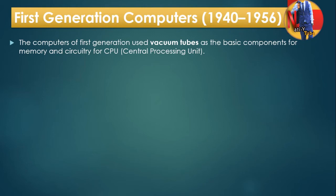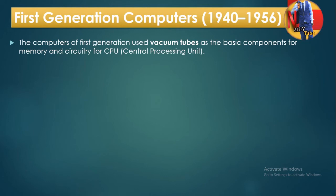Vacuum tubes are the basic components for the memory and circuitry for the CPU, or central processing unit. The vacuum tube was used before this generation for the memory and the CPU. It emits electrons and performs basic functions in the computer system.